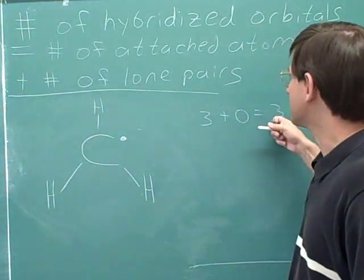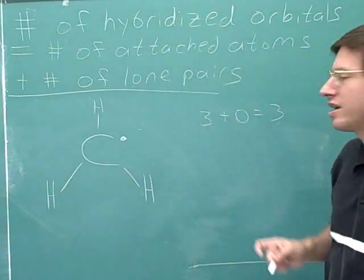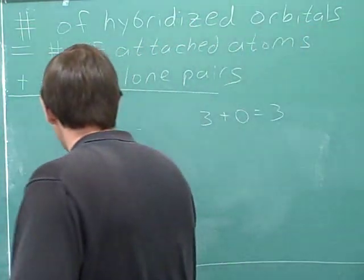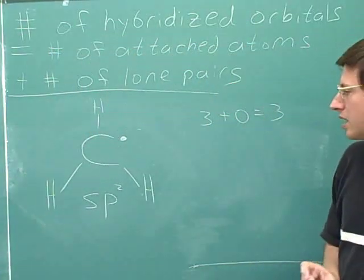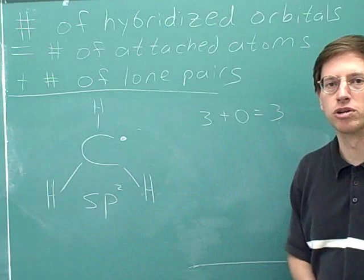Three plus zero is three. So the number of hybridized orbitals is three. And this would be an sp2, an sp2 hybridizing three orbitals.